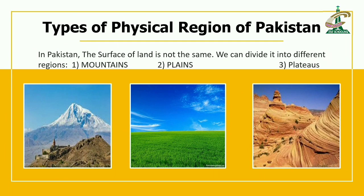Intelligent students of Grade 5, in this slide we will discuss about the types of physical regions of Pakistan. In Pakistan, the surface of land is not the same — we can divide it into three different regions. In picture number 1 you can see a mountain, which is the first type of physical region. In picture number 2 the surface of land is plain, which is the second type. And plateaus are the third type of physical region of Pakistan.